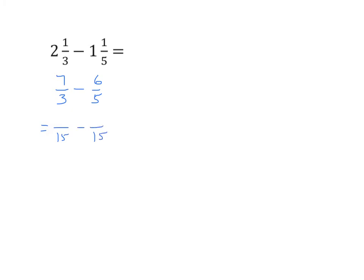And 2 and 1 third is 7 thirds, which is also the same as 35 fifteenths. And 6 fifths is the same as 18 fifteenths. We find the difference between those two, and we get 17 fifteenths, which is the same as 1 and 2 fifteenths.